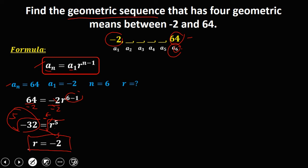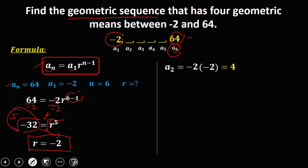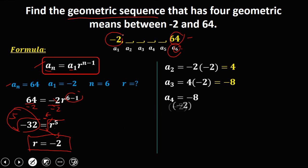Since r is equal to negative 2, to solve for a sub 2, a sub 3, a sub 4, and a sub 5, just multiply each term by the common ratio. So a sub 2 is negative 2 times negative 2, that's positive 4. Then a sub 3 is positive 4 times negative 2, that's negative 8. Then a sub 4 is negative 8 times negative 2, that's positive 16. And a sub 5 is 16 times negative 2, that's negative 32.